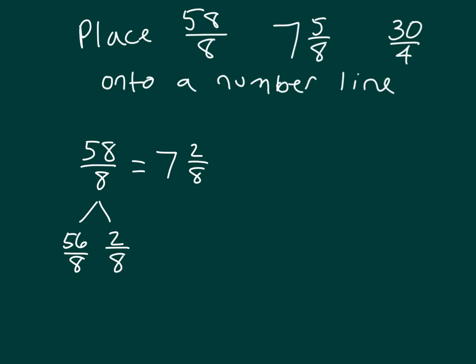So 58 eighths is equal to 7 and 2 eighths. We also had 7 and 5 eighths, which is already a mixed number, so we do not need to do anything with it. And then we have 30 fourths. 4 goes into 30, 7 whole times, with the remainder of 2, so it's 7 and 2 fourths, which is also equal to 7 and 1 half.